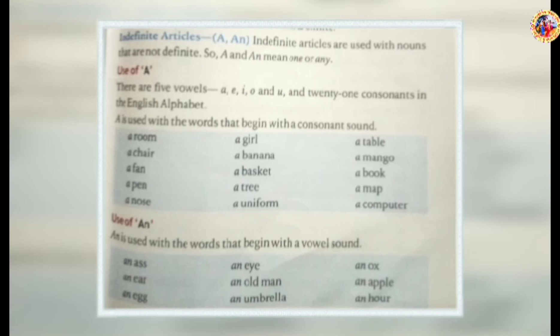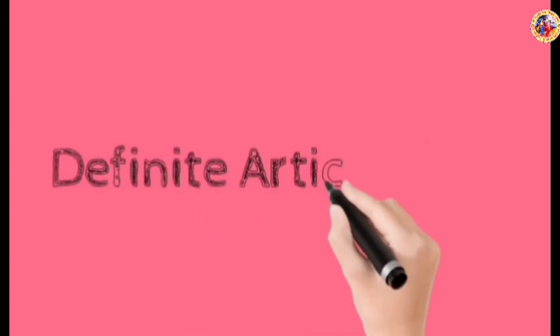There are 21 consonants in the English alphabet. A is used with words that begin with a consonant sound.